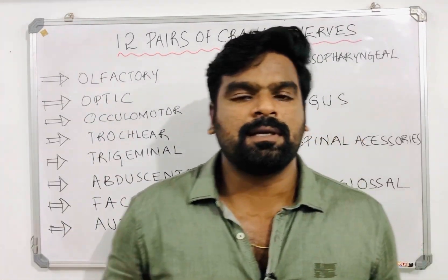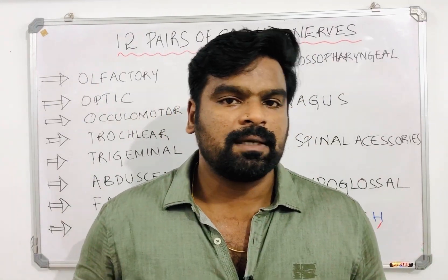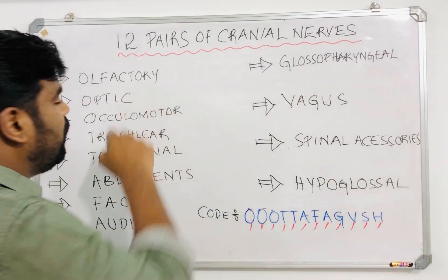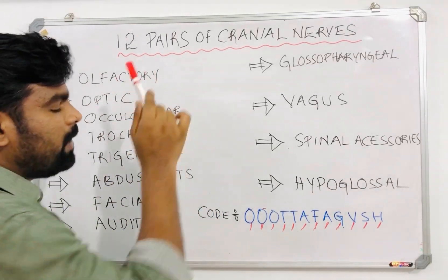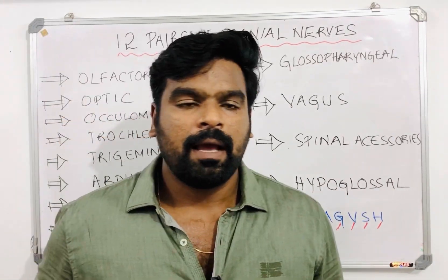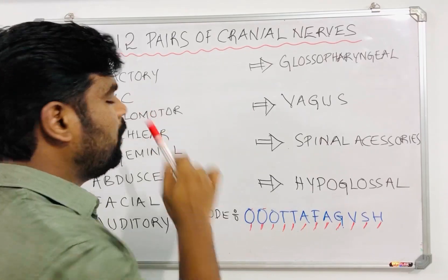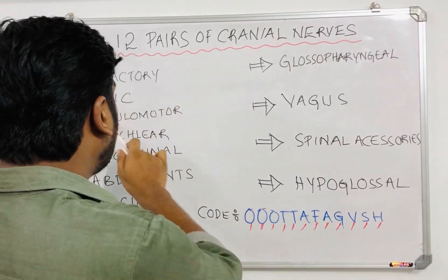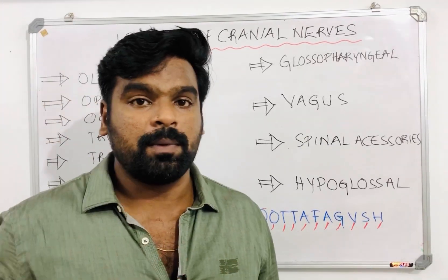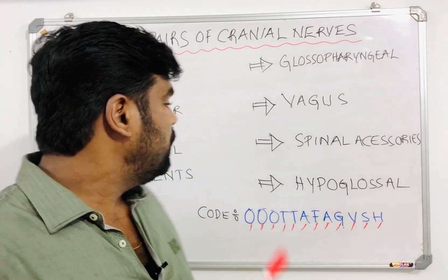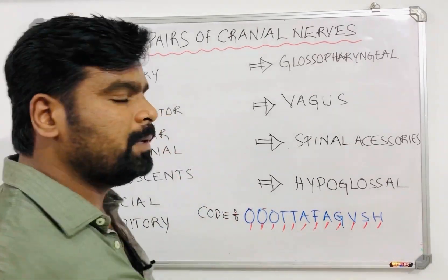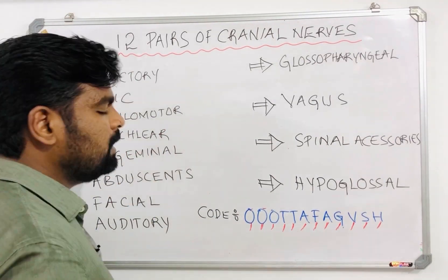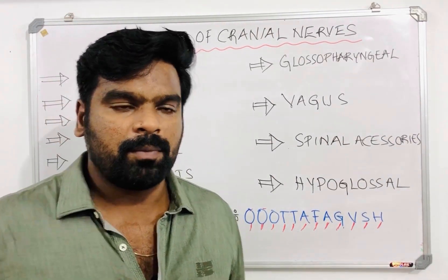Let me discuss the functions of each cranial nerve. The first one, olfactory, is for smell. The second, optic, is for vision. Oculomotor — 'motor' means movement — so oculomotor is for eye movements. Trochlear is also for eye movements.